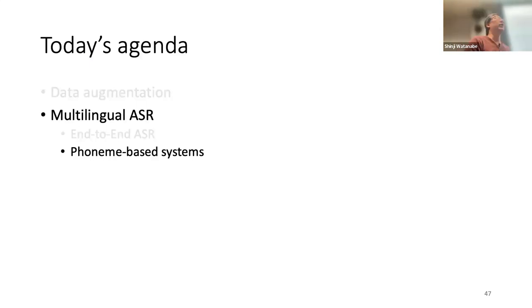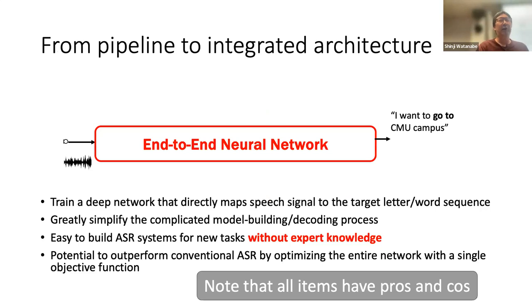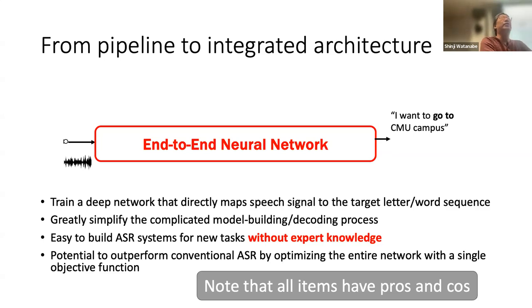Last time we discussed multilingual ASR and the benefits of using end-to-end ASR for multilingual speech recognition applications. We can build a speech recognition system without expert knowledge — specifically, without needing a pronunciation dictionary, which is not easy to get and makes it difficult to build speech recognition for some specific languages. This is what we learned last time, but every property has pros and cons.